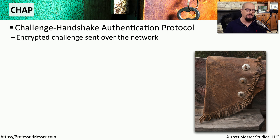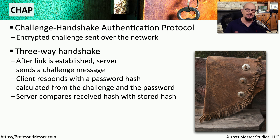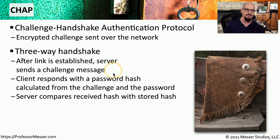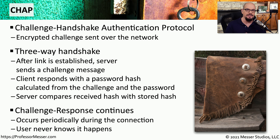A step up from PAP is the Challenge Handshake Authentication Protocol, or CHAP, which provides an encrypted challenge sent across the network, adding additional security over PAP. CHAP uses a three-way handshake. Once there is a link, the server sends the client a challenge message. That challenge is combined with a password hash and sent back to the server, which evaluates the password and challenge to see if it matches what's expected. This challenge-response process may occur multiple times while the session is active, though the end user never sees it happening.